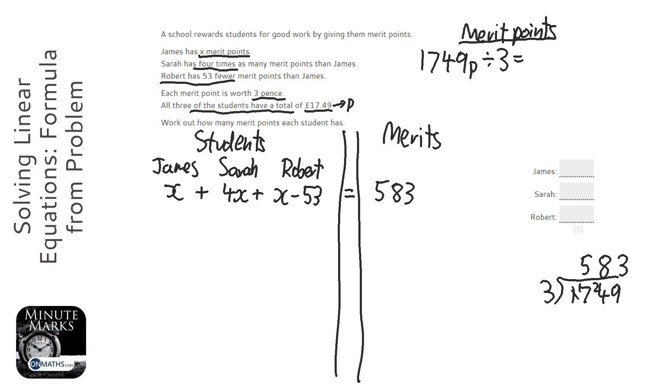So when I collect like terms on the left hand side, x plus 4x plus x is 6x minus 53 equals 583.